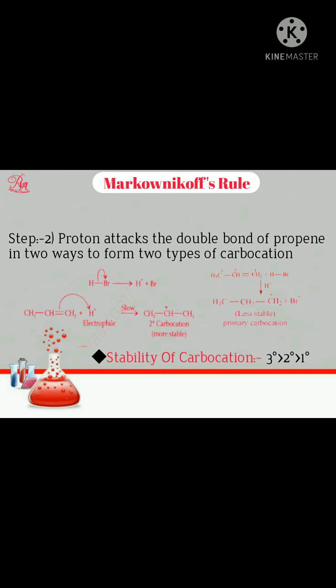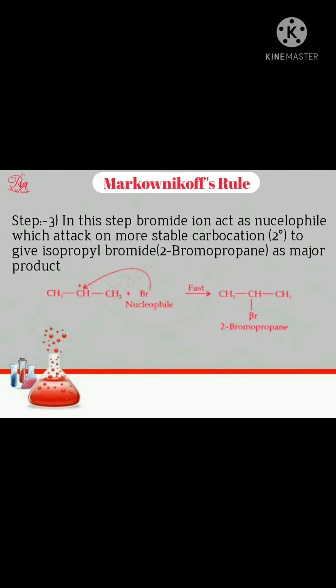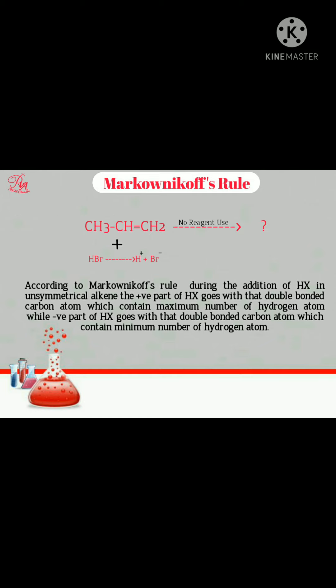We know that tertiary carbocation is more stable than secondary, and secondary is more stable than primary carbocation. Part A gives the more stable carbocation. Therefore, the secondary carbocation adds bromine in the next step. Step three: Bromine, which acts as nucleophile, attacks the secondary carbocation and we get isopropyl bromide, which is the major product.